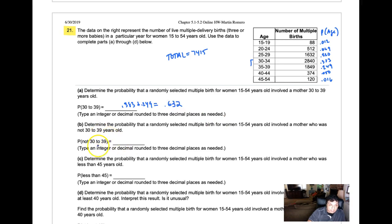What's the probability of picking a woman that is not 30 to 39? That's the complement. You're going to do 1 minus the probability of someone being 30 to 39.